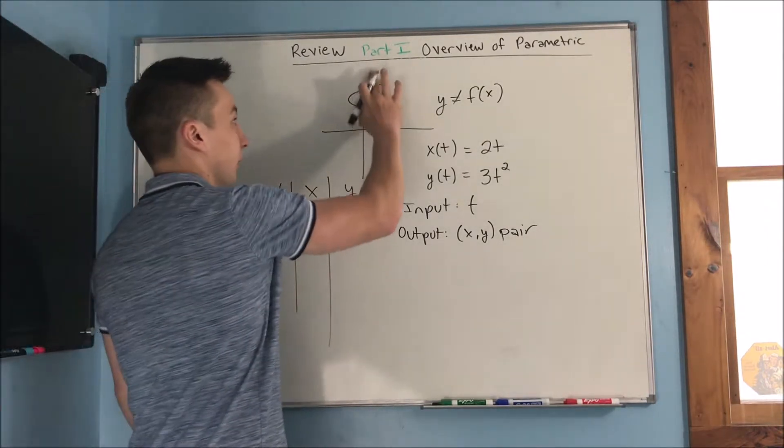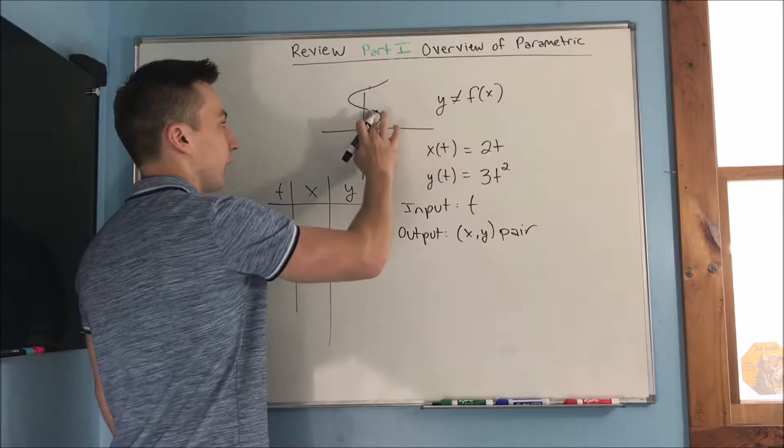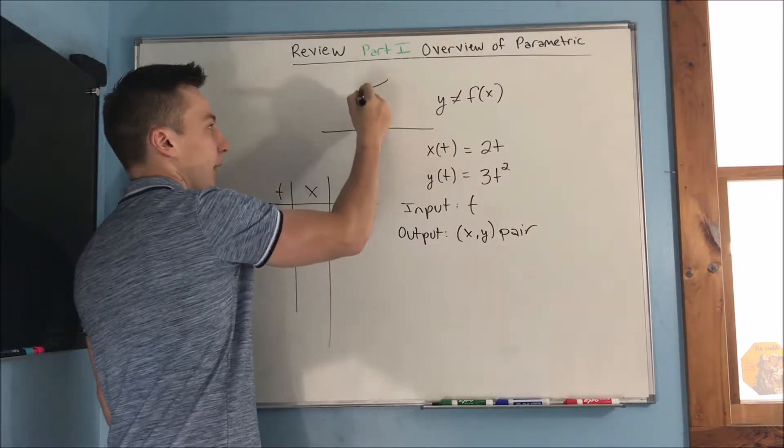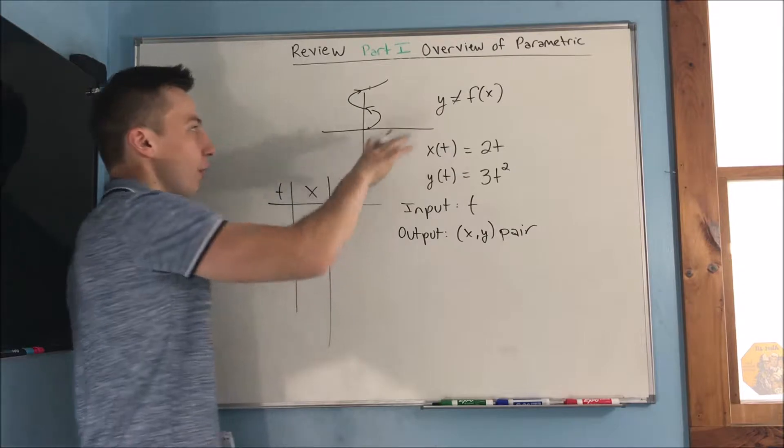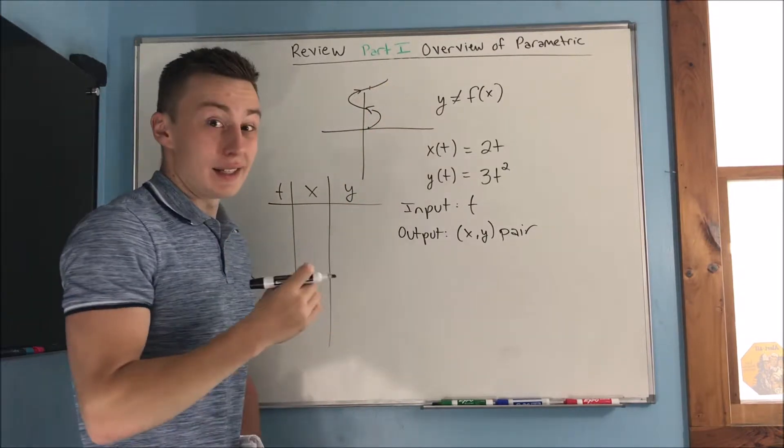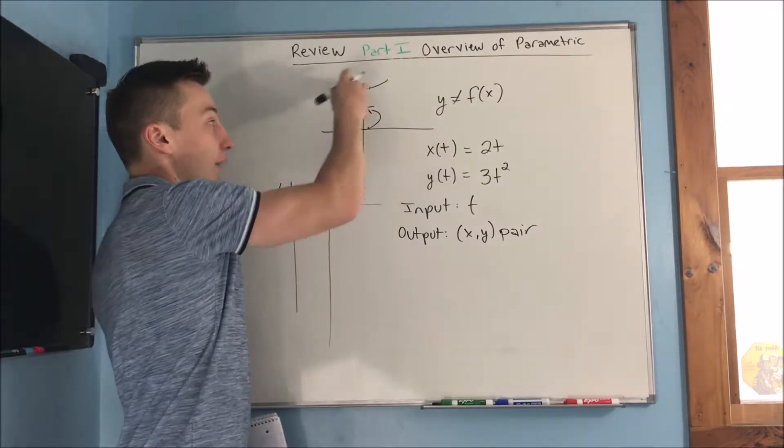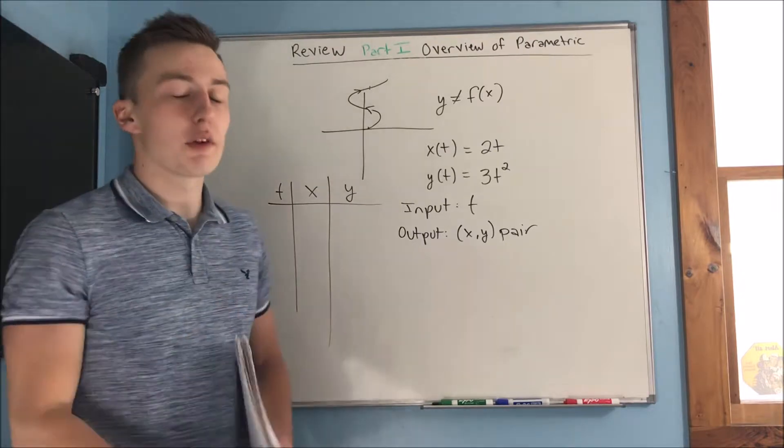So let's bring up this curve again. Say it was going this way. You have to give it direction, because as time is increasing, this graph is going to be going in a certain direction, and you have to point out that direction.